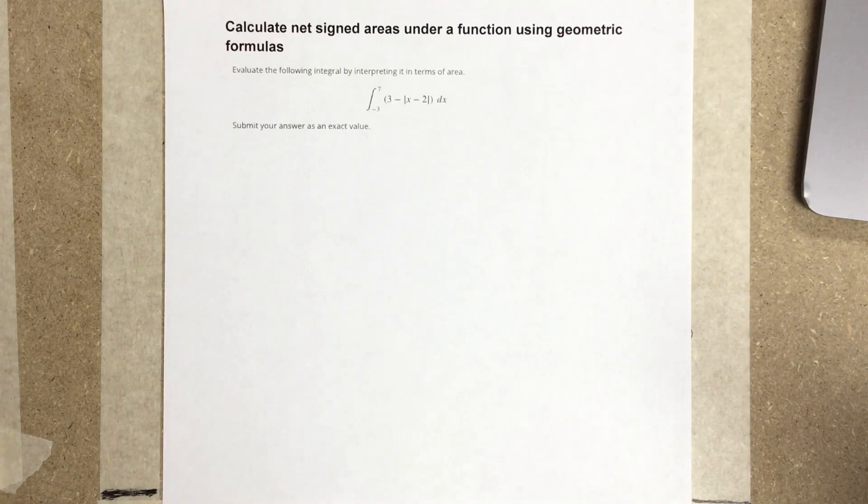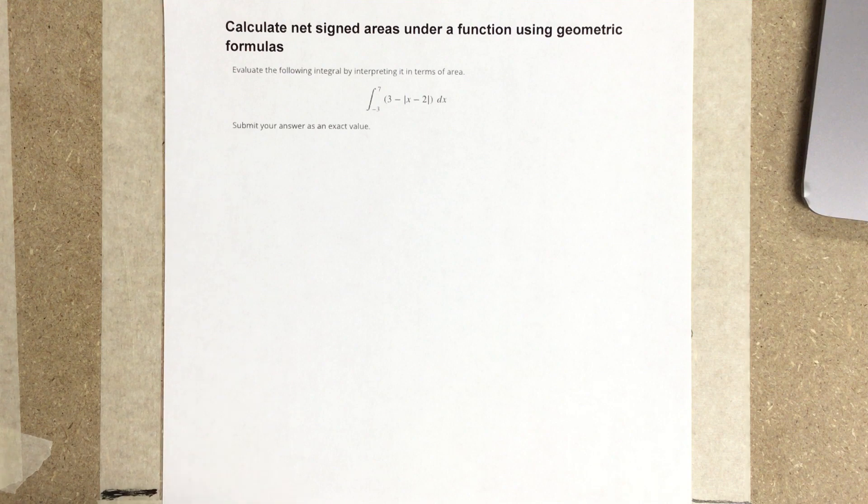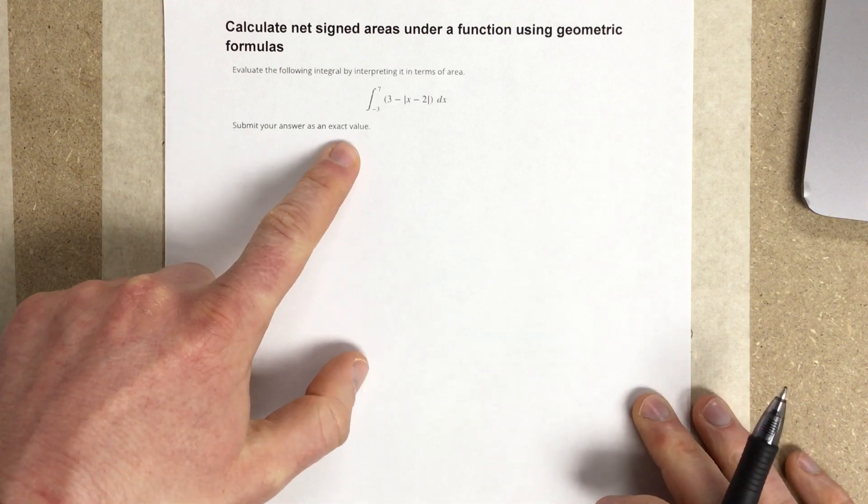In this video, I'm going to calculate net signed areas under a function using geometric formulas. It says evaluate the following integral by interpreting it in terms of area. Submit your answer as an exact value.